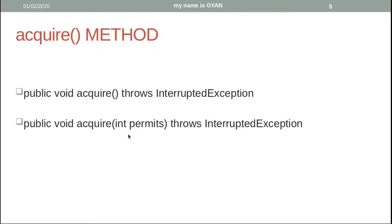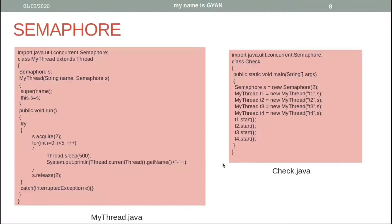With only one counter value remaining, that thread will not be able to execute the critical section. This code is similar to the previous code we have seen, but in this case we are calling the acquire method with two as its argument and the release method with two as its argument. The initial value of the counter is two. So when a thread calls the acquire method, it will consume both values of the initial counter.